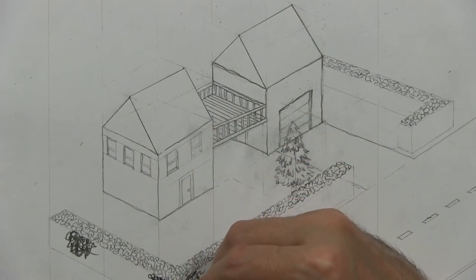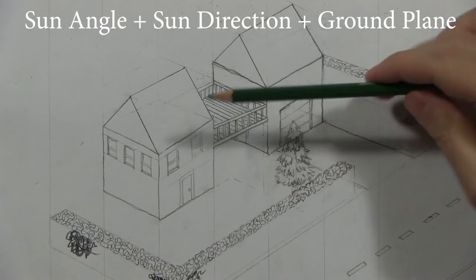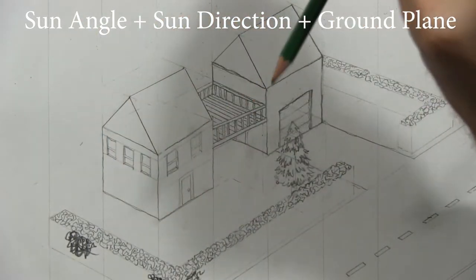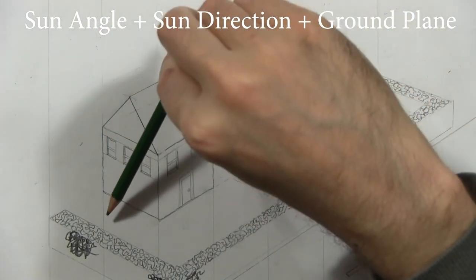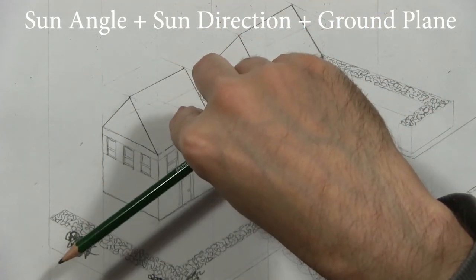What information did we need to figure out the shadow projection? We needed to understand the angle of the sun. That means the sun coming down at an object. We needed to know the direction of the sun.